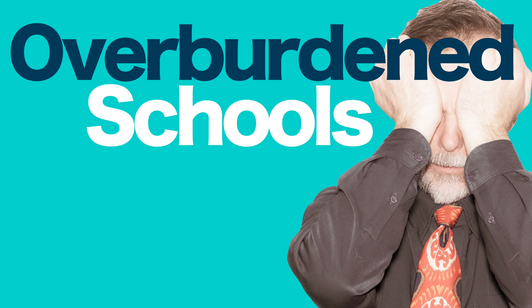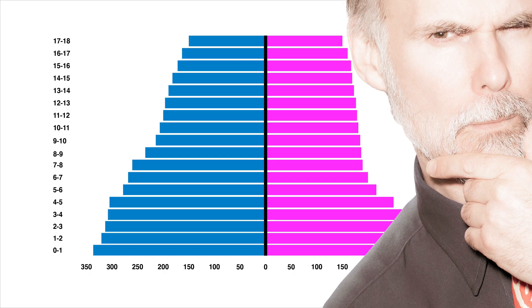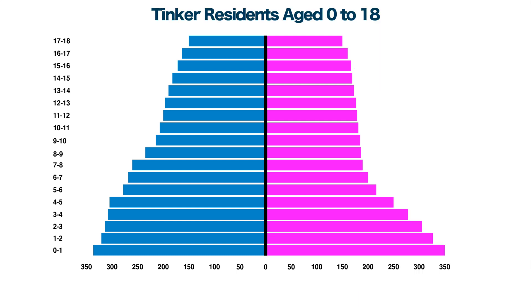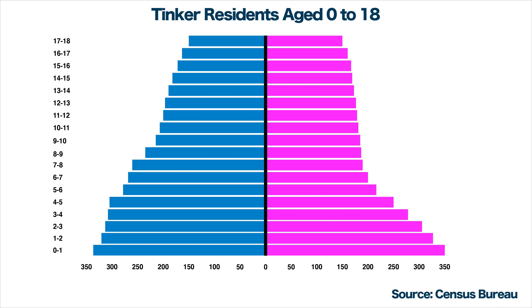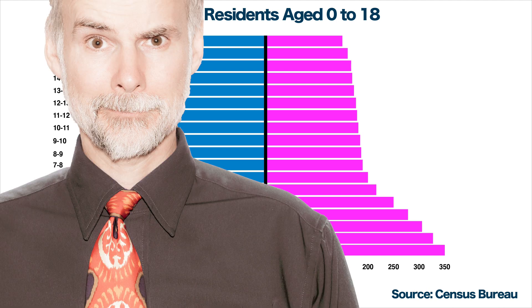The rapid influx of new residents, however, has placed a heavy burden upon Tinker's school system, especially in terms of ballooning class sizes. To assess the extent of the problem, you created a population pyramid of Tinker residents age 0 to 18, using the latest census data. At the top of the diagram is the title, and the source of the data is at the bottom. The left side of the pyramid shows the number of males ages 0 to 18 residing in Tinker, and the right side shows the distribution of females. Now you're ready to write a three-part description and analysis of Tinker's present and future student body, so that the town council can consider its priorities in the upcoming budget.